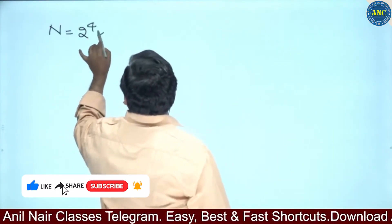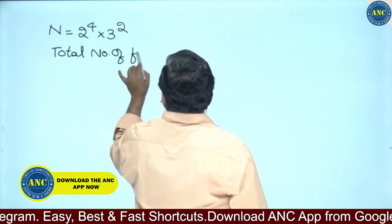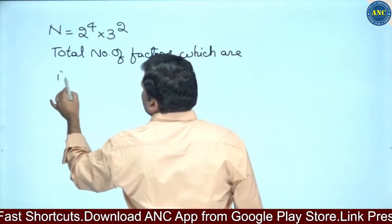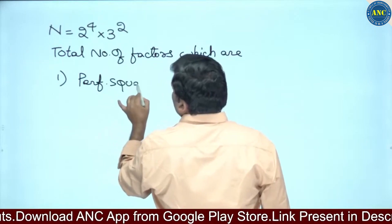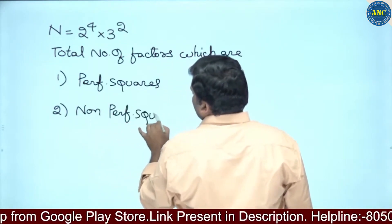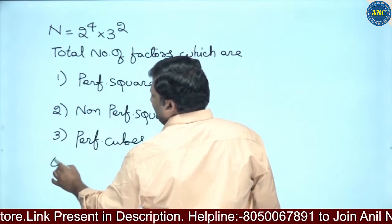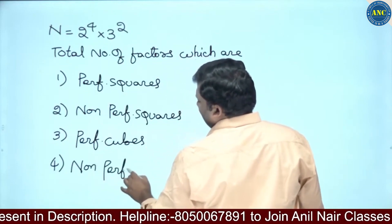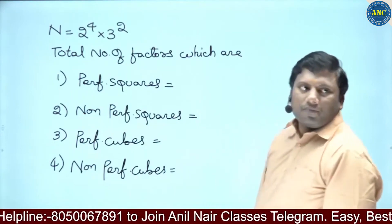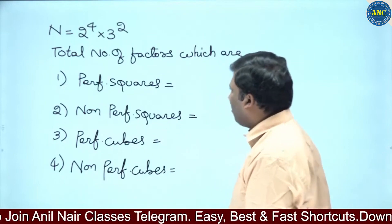Given n = 2⁴ × 3², find the total number of factors which are perfect squares, non-perfect squares, perfect cubes, and non-perfect cubes. We will discuss this variety — first 15-20 minutes to get the concepts clear, then we can solve the problems very easily.